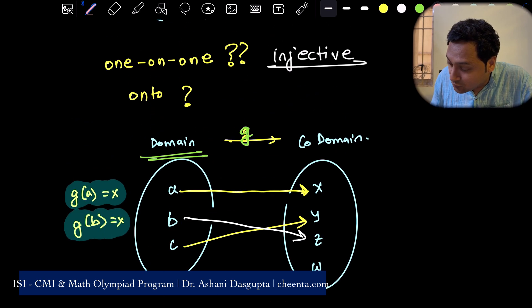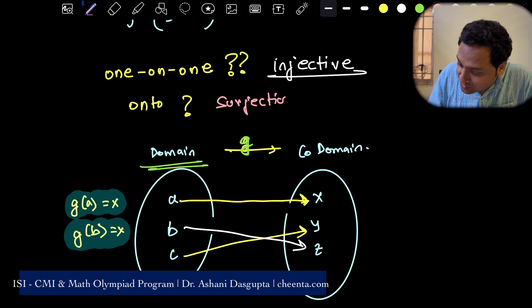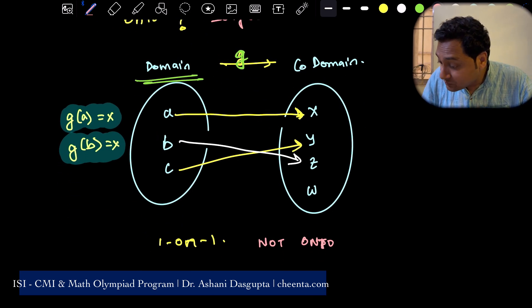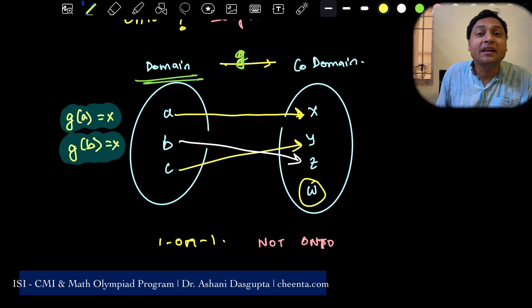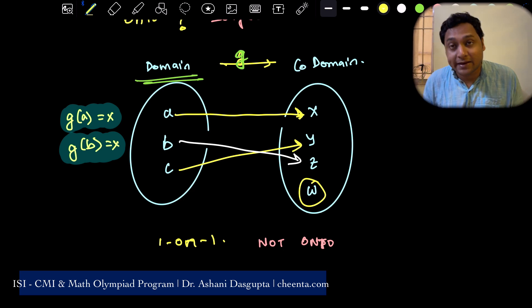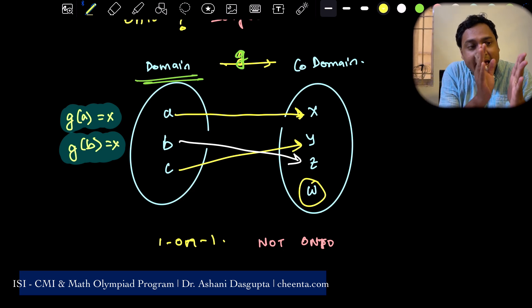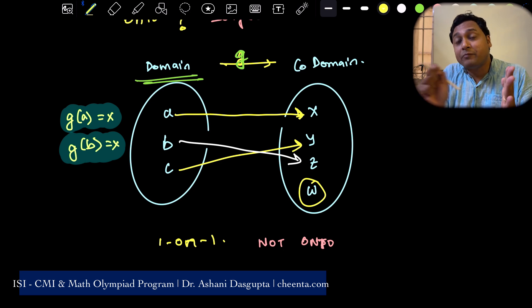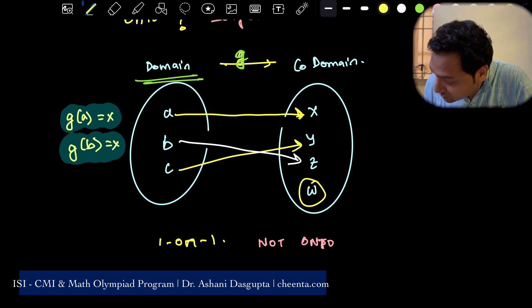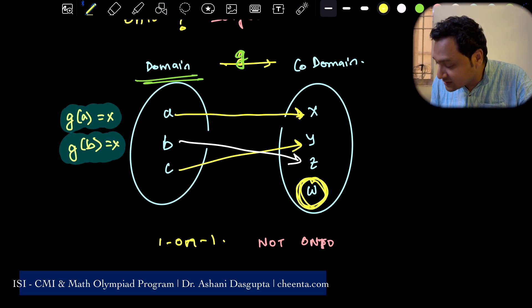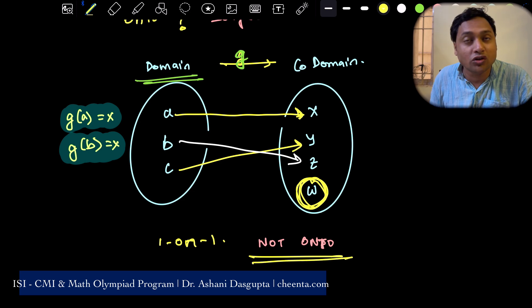So onto has another word. It's called surjection. What does it mean? It means that every member in the co-domain has a pre-image. There is one arrow coming to it. Some element of the domain is getting mapped to that element of the co-domain. For every element, this is true. So this function, no arrow is coming to w. Therefore, it is not onto.